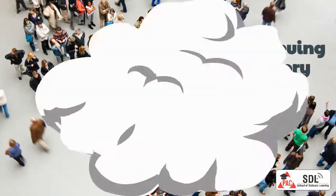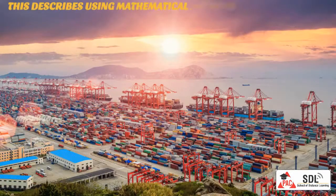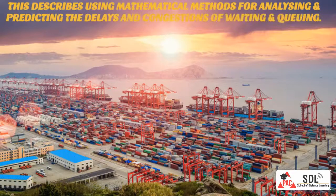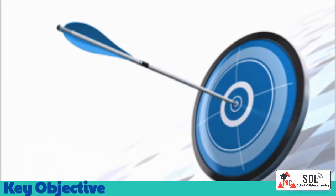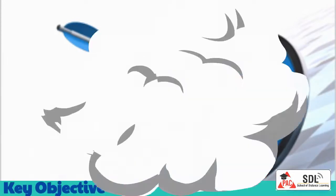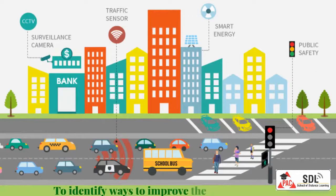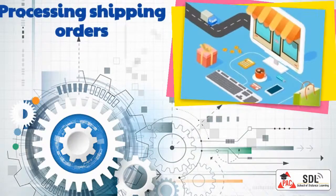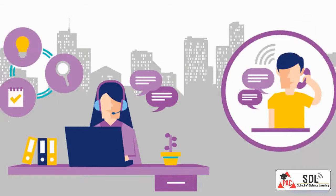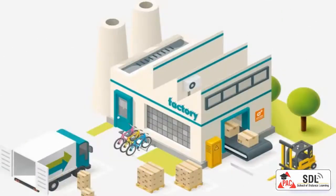Queuing Theory describes the use of mathematical methods for analyzing and predicting delays and congestions of waiting and queuing. The objective is to identify ways to improve the process to make it quicker. Examples include traffic flow, processing shipping orders, reducing average time per call, and improving flow through shops, factories, and hospitals.